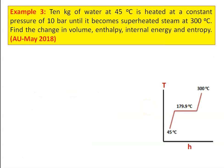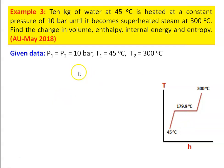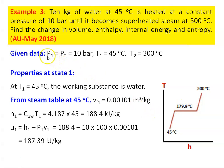Example 3 from Anna University question paper May 2018: 10 kg of water at 44°C is heated at constant pressure of 10 bar until it becomes superheated steam at 300°C. Find the change in volume, enthalpy, internal energy, and entropy. The temperature-enthalpy diagram shows water at 45°C being converted to saturated water at 179.9°C (saturation temperature at 10 bar), then to dry saturated steam, and further to superheated steam. Given: P1 = P2 = 10 bar, T1 = 45°C, T2 = 300°C.